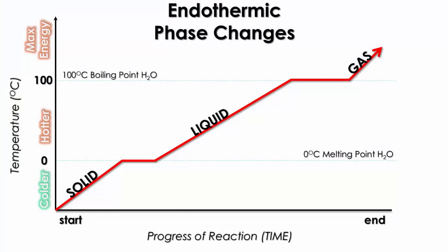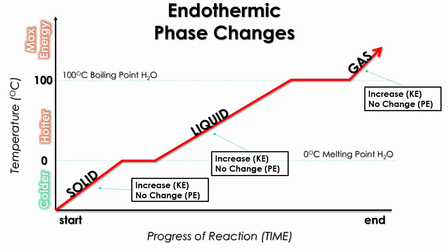When we look at our phase change diagram for endothermic phase changes — and endothermic means gaining heat, meaning heat is going into the sample — you can also determine that it's endothermic because you start on the left at a very cold temperature and end on the right at a very high temperature. As you go up, at the solid phase there will be an increase in kinetic energy, but there will be no change in potential energy.